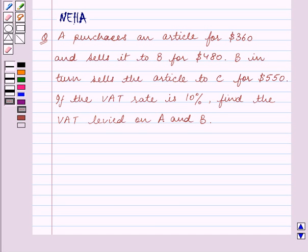Hello and welcome to the session. In this session we will discuss the following question. The question says A purchases an article for $360 and sells it to B for $480. B in turn sells the article to C for $550. If the VAT rate is 10%, find the VAT levied on A and B.